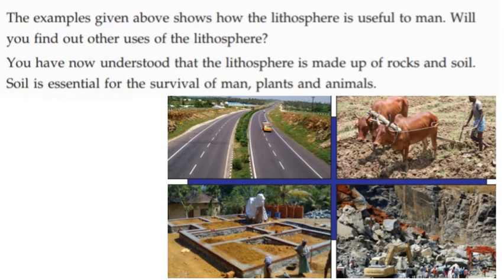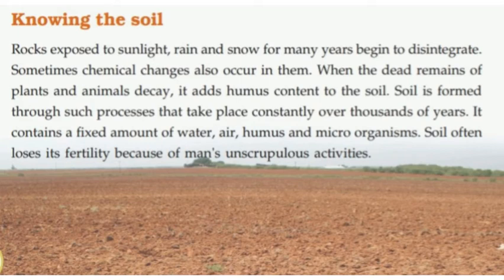What is the lithosphere made of? Soil is essential — that means the soil is essential for humans. Rocks exposed to sunlight, rain and snow for many years begin to disintegrate. Sometimes chemical changes also occur in them. When the dead remains of plants and animals decay, it adds humus content to the soil. Soil is formed through such processes that take place constantly over thousands of years.